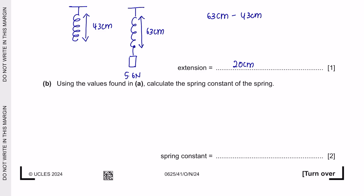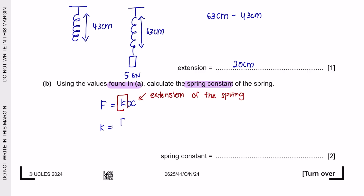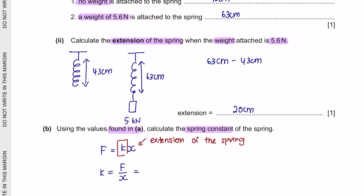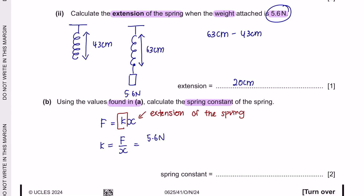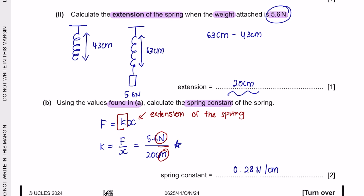Question part B: using the values found in part A, calculate the spring constant of the spring. According to Hooke's Law, force equals the spring constant multiplied by the extension of the spring. Since we're looking for the constant, we'll make it the subject. The force is the weight of the object, which is 5.6 N, and the extension of the spring was 20 cm. So the spring constant is 0.28 N per centimetre. If you do not know the unit, you can always derive it from the formula.